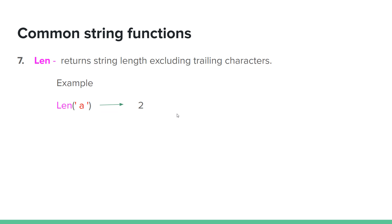LEN returns the length of a string, excluding trailing spaces. For example, LEN of a space and 'a' — this is a character count. LEN is a similar function but has a space ignoring behavior.